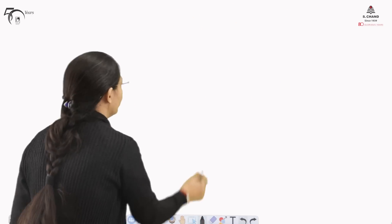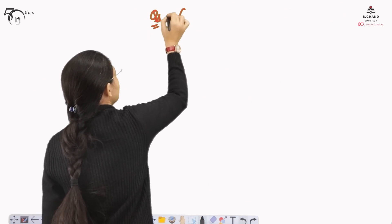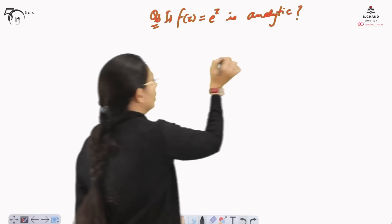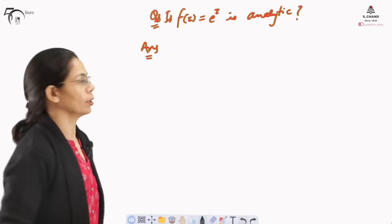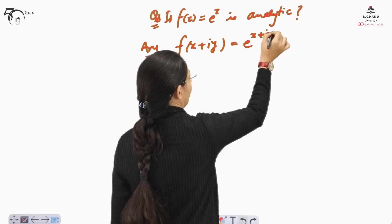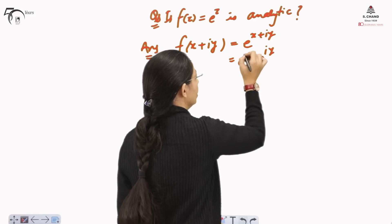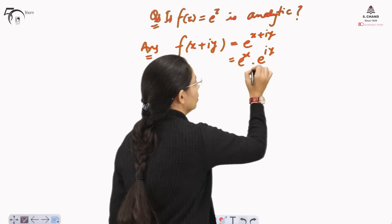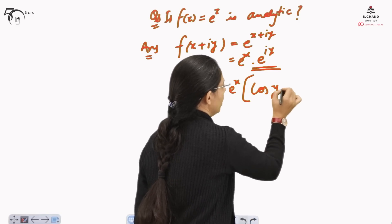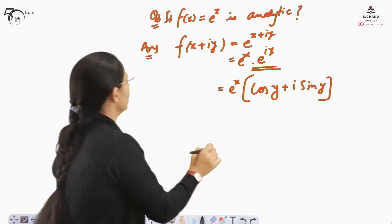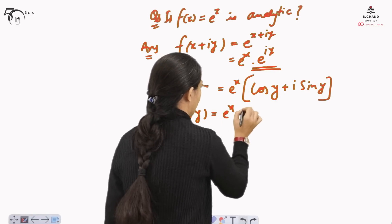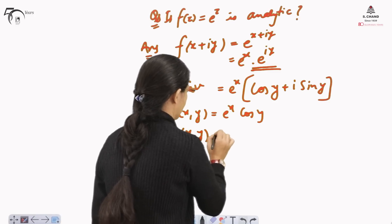Let us take one more example. Check whether f(z) = e^z is analytic. To do so, we separate the real and imaginary parts: f(x + iy) = e^(x+iy) = e^x · e^(iy). Using Euler's formula, this becomes e^x(cos y + i·sin y). Equating real and imaginary parts, we get u(x,y) = e^x cos y and v(x,y) = e^x sin y.